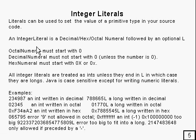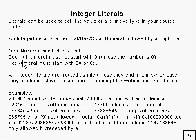An integer literal is basically a decimal or a hex or an octal numeral followed by an optional L. An octal numeral has to start with zero — that's a requirement — and a decimal numeral must not start with zero, unless it happens to be zero. This decimal numeral doesn't include a decimal point, so there's no question of it being floating or anything like that. A hex numeral has to start with 0x, where x is either upper or lower case.